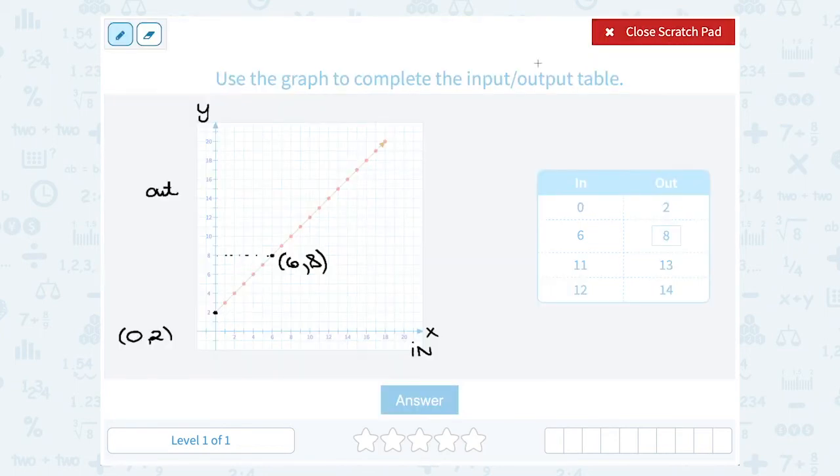And of course, you can see all of the other pairs match that same pattern. If I go to 11, that's halfway between 10 and 12, and it puts me at this point. I can read across to see that's halfway between 12 and 14, which is 13. So all of these pairs are coordinates, or ordered pairs, on my line.